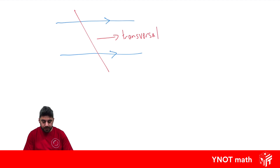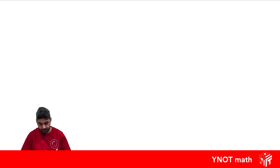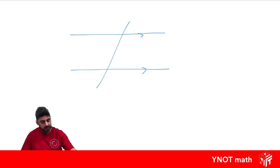There are three special results whenever we have parallel lines and a transversal. Let's draw two parallel lines with a transversal. So these are the two parallel lines.